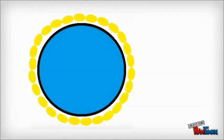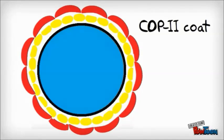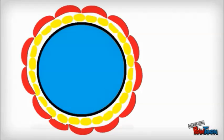Vesicles that have left the ER are enclosed in a COP2 coat, which consists of two subunits shown here in yellow and red. Some of the membrane proteins trapped by the coat function as cargo receptors binding soluble proteins in the lumen.